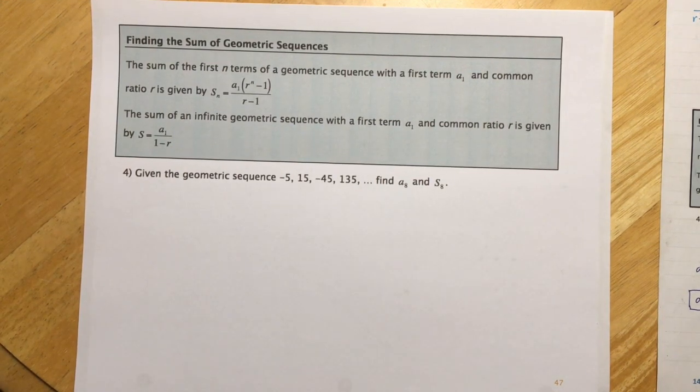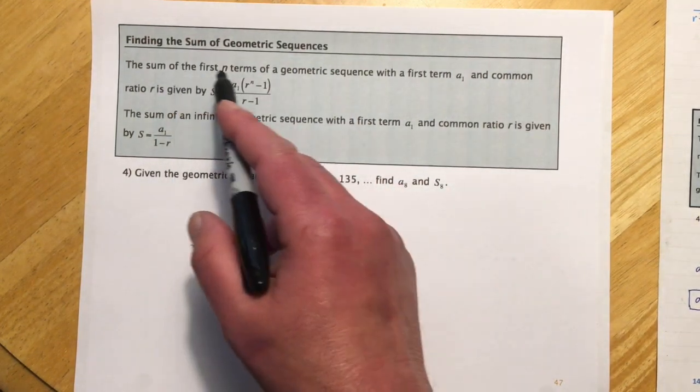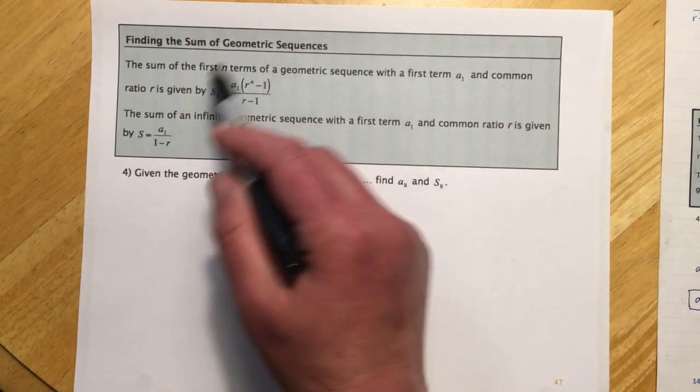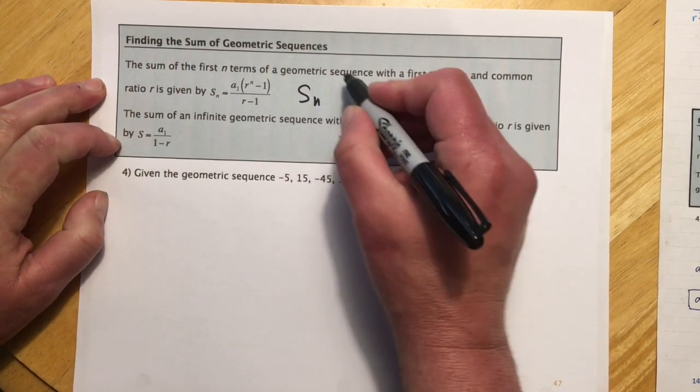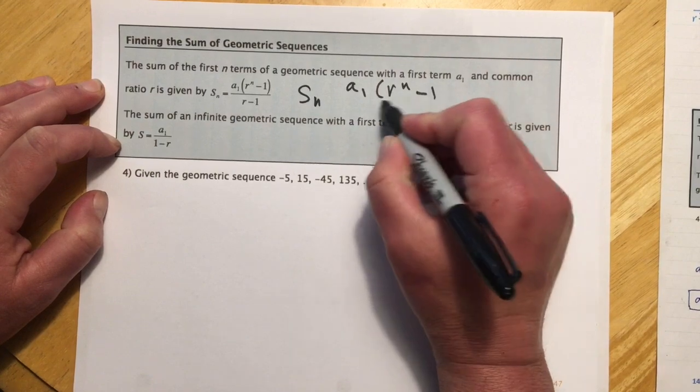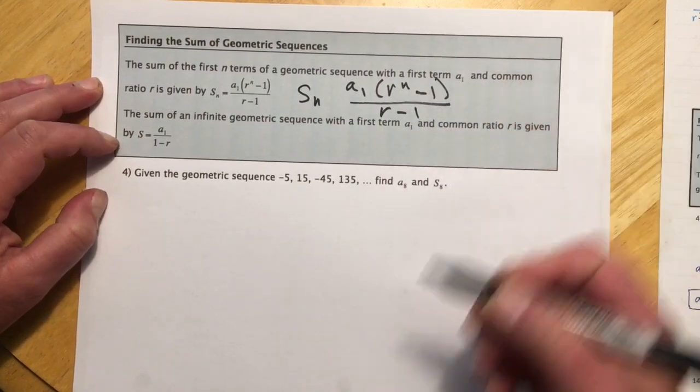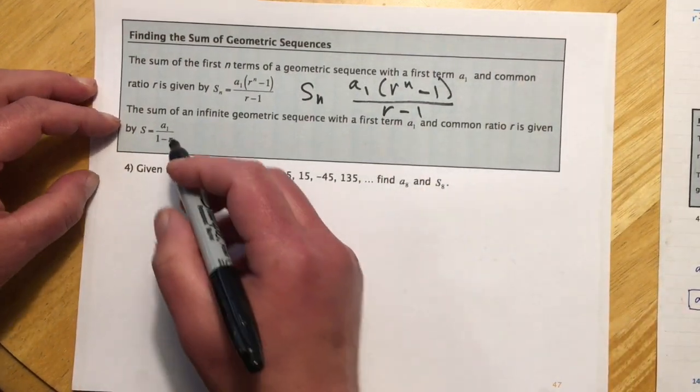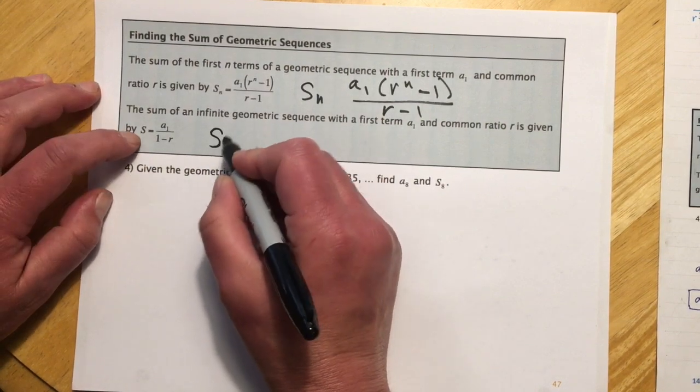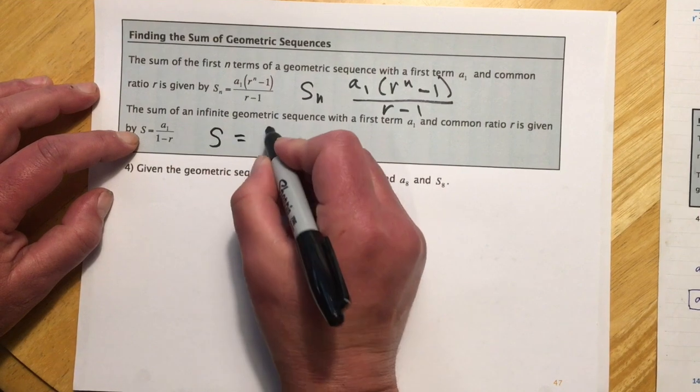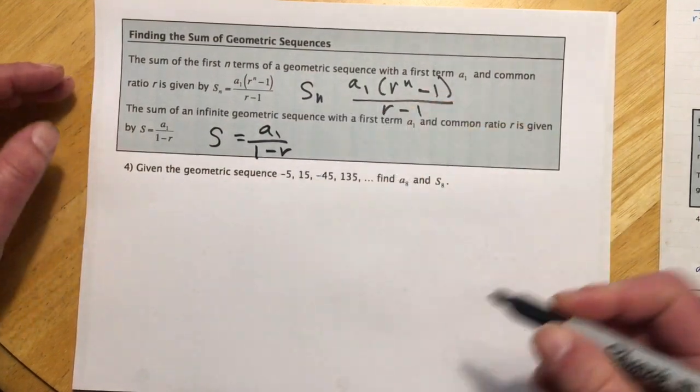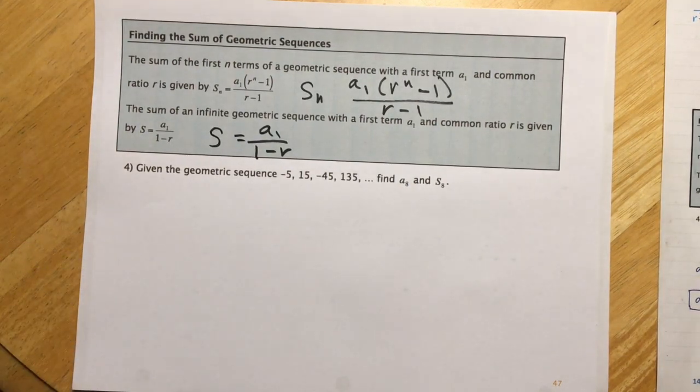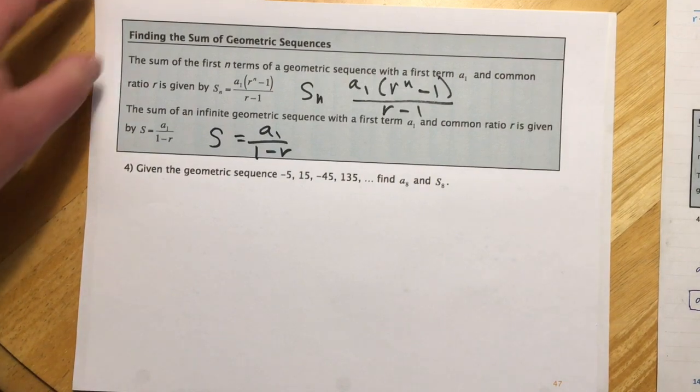Okay, so then we get to the sums. So finding the sum of a geometric sequence. The sum of the first n terms, so if it's finite, is given by this formula here. S sub n equals a sub 1 times r to the n minus 1 over r minus 1. And then the sum of an infinite geometric sequence with the first term a sub 1 and common ratio r is given by this one. So the sum, there's no subscript on this because it's infinite, equals a sub 1 over 1 minus r. I'm going to take just a second and kind of talk about how it's a strange idea that you can add an infinite number of things and it comes up to something finite.